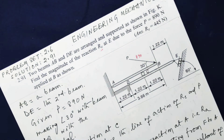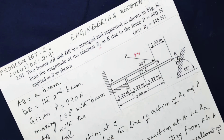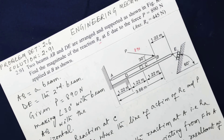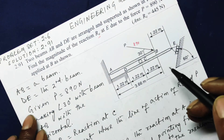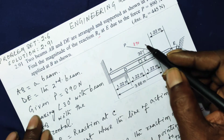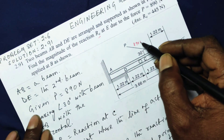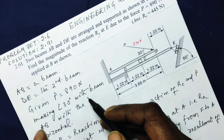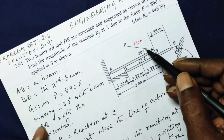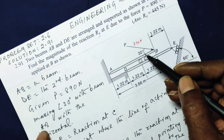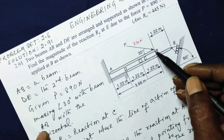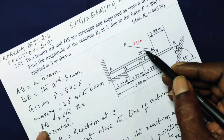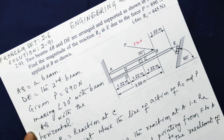So, AB is the first beam and DE is the second beam. Given: the applied force P is equal to 890 Newton, making an angle of 30 degrees with beam AB at point B, that is, making 30 degrees with the horizontal.